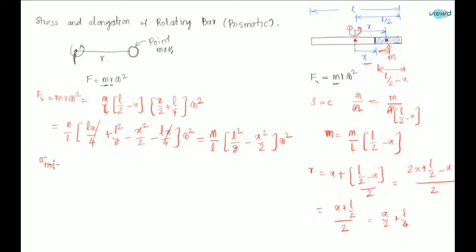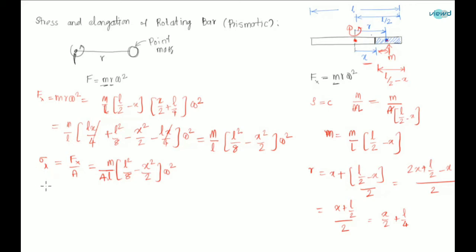The stress on that cross section σx equals centrifugal force divided by cross-sectional area A: σx = (M/Al)·(l²/8 - x²/2)·ω². For maximum stress, when x = 0 we get the maximum value. We can verify this by differentiating σx with respect to x and equating to zero, which gives x = 0.